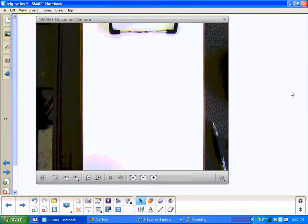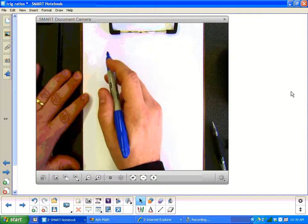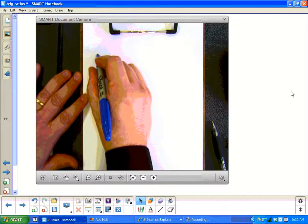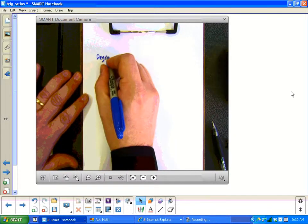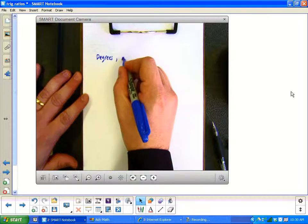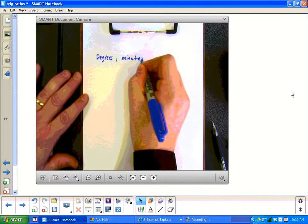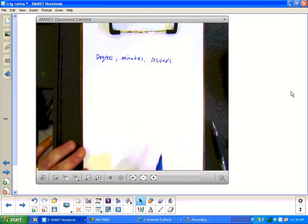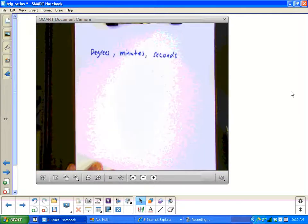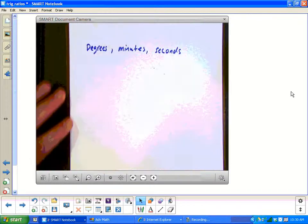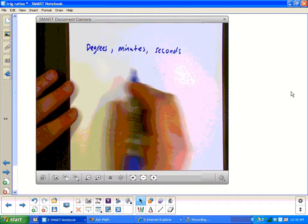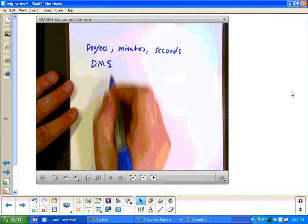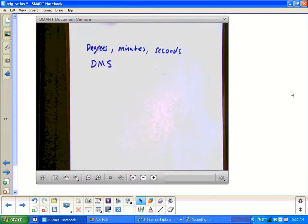Now, it's different though. Let's look at this idea. We're going to look at what we call degrees, minutes, and seconds notation. This is also sort of known as DMS - degrees, minutes, and seconds.